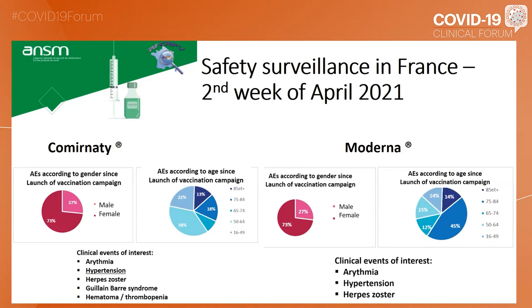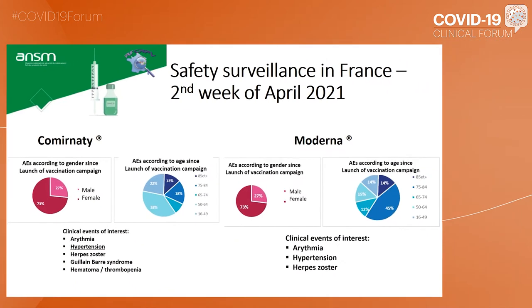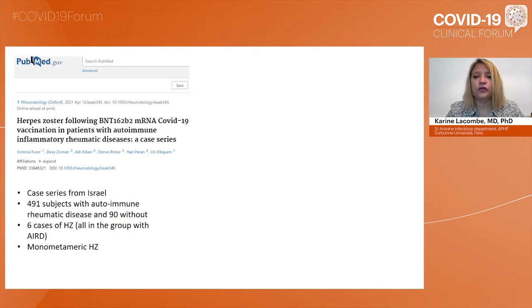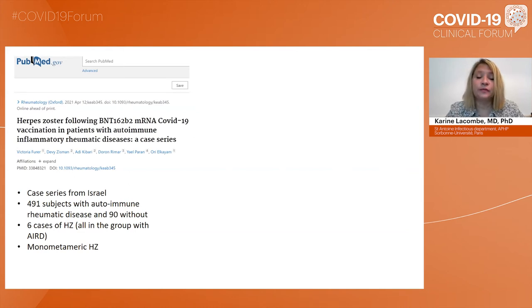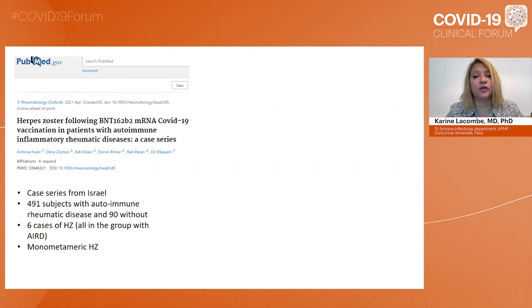If we switch to the tolerability of the Comirnaty vaccine in the general population, I found two reports in the literature showing the safety profile when used outside of clinical trials. First, a case series from Israel where 491 subjects with autoimmune rheumatic disease were vaccinated and 90 were compared without any rheumatic disease. Six cases of herpes zoster were noted, all in the group with autoimmune rheumatic disease, and that was only monomeric herpes zoster — so nothing very serious.